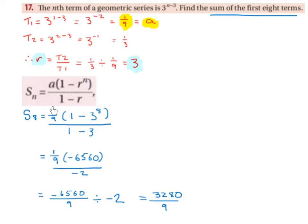So we have 1 over 9 multiplied by 1 minus 3, because the ratio is 3, to the power of 8, because we're finding the sum of the first 8 terms, divided by 1 minus 3.